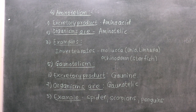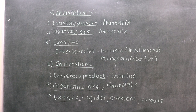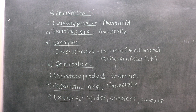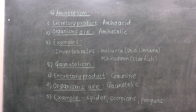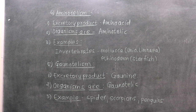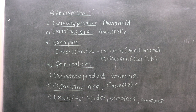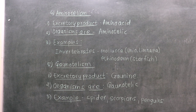In summary: ammonotelism involves excretion of ammonia as the nitrogenous product. Additional modes include aminotelism seen in molluscs such as Unio and Limnaea, and echinoderms like starfish. Guanotelism involves excretion of guanine, seen in arachnids like spiders and scorpions. Birds such as penguins are examples of uricotelic organisms. This covers the five modes of excretion depending upon the excretory product.